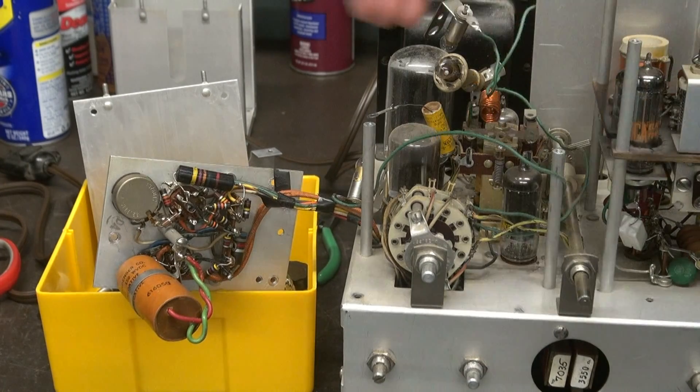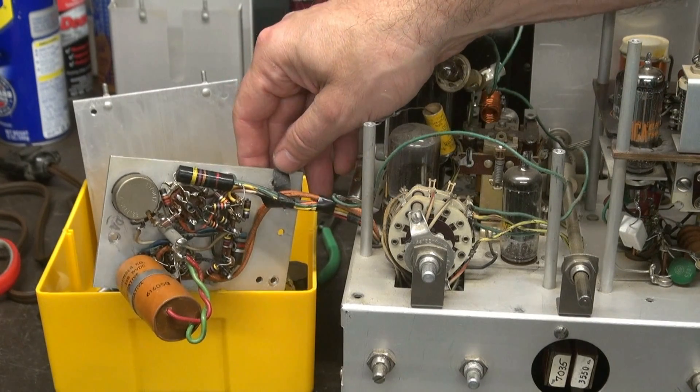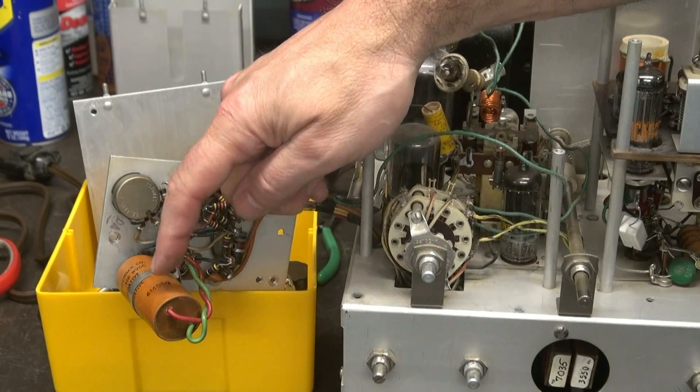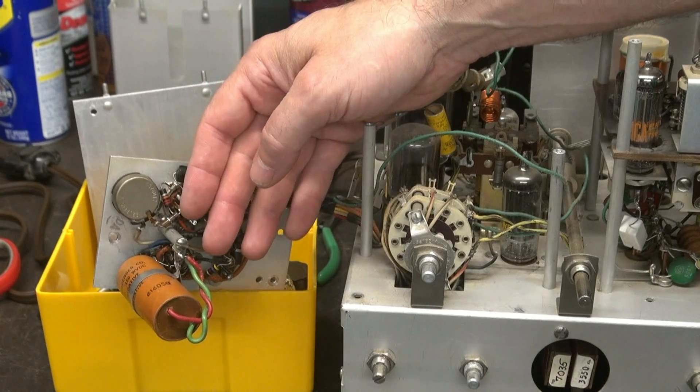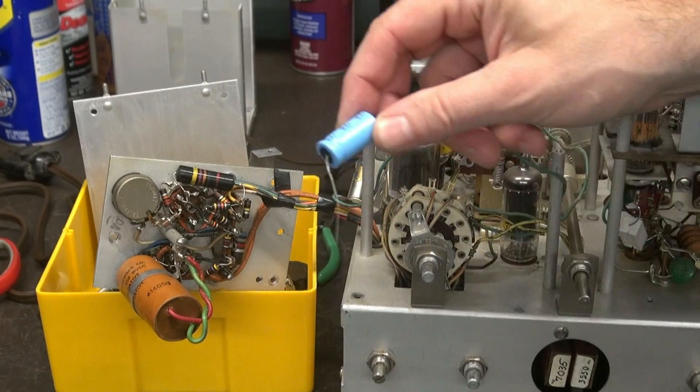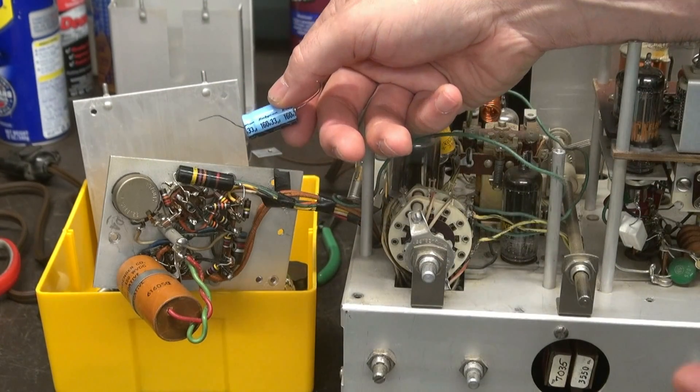So the first cap we're going to change out is underneath the keyer platform. Since we have full access, this big snozz-o-ramus here is two 15 microfarad caps wired in parallel to give you 30 microfarads. We're going to change it out with this little guy. Look at the room that we're going to gain.